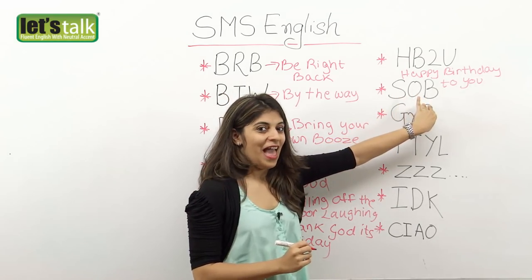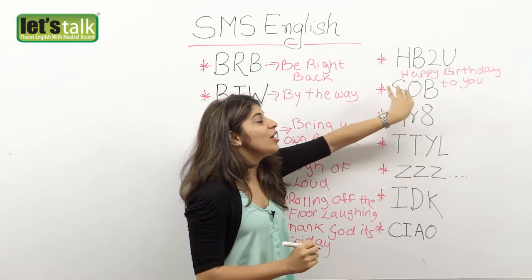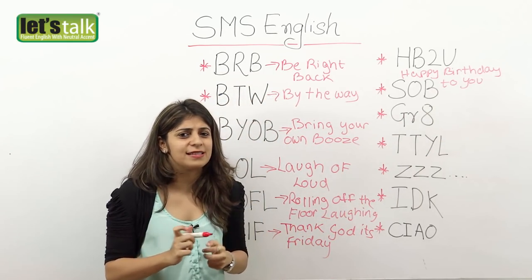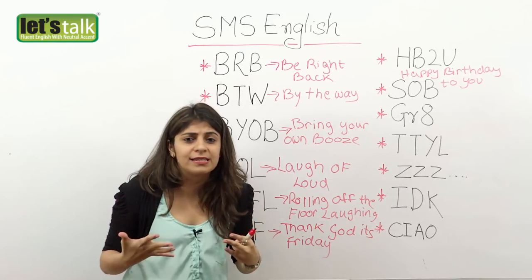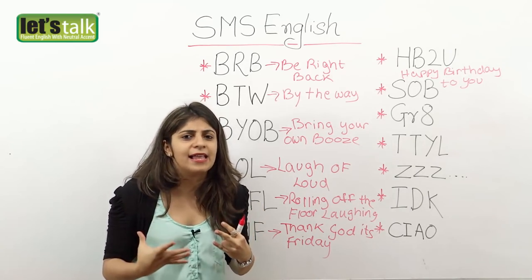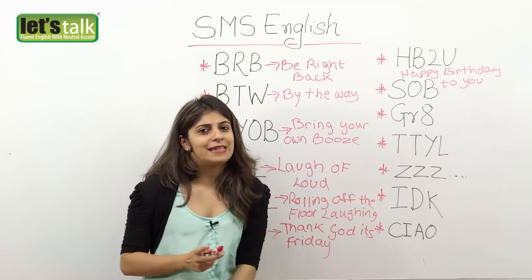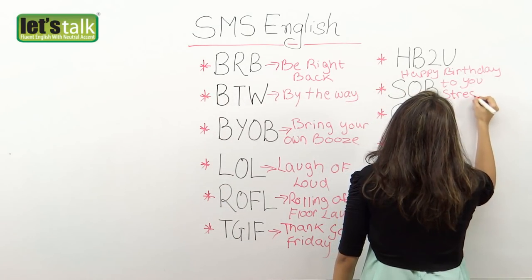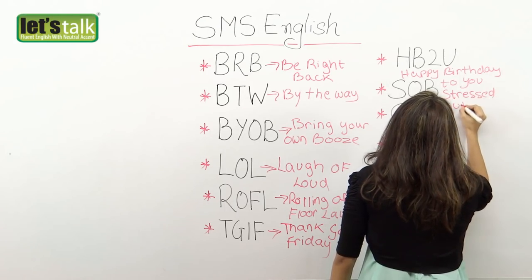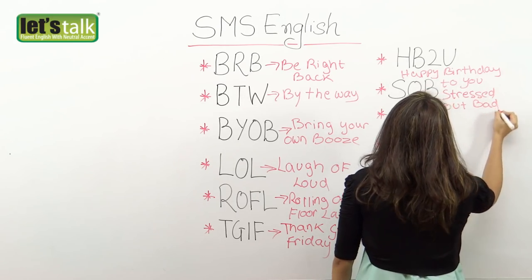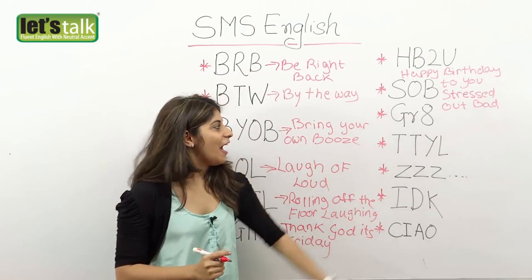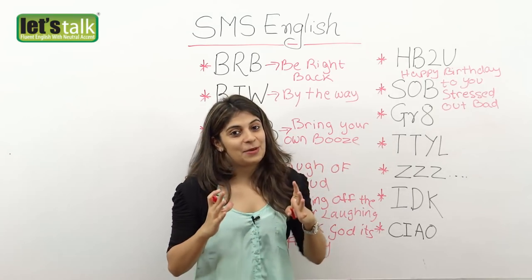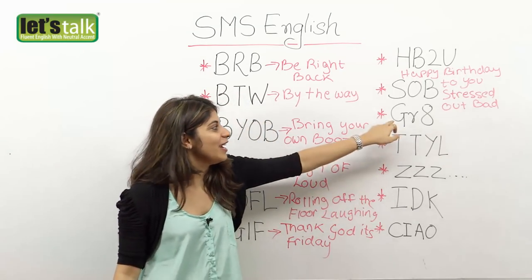Then we have SOB, which means 'stressed out bad.' So this means you are extremely stressed and expressing that you are so tense and stressed. Then we have GR8 — that means 'great.' It is kind of an exclamation, like 'oh that's great,' so you can write GR8.